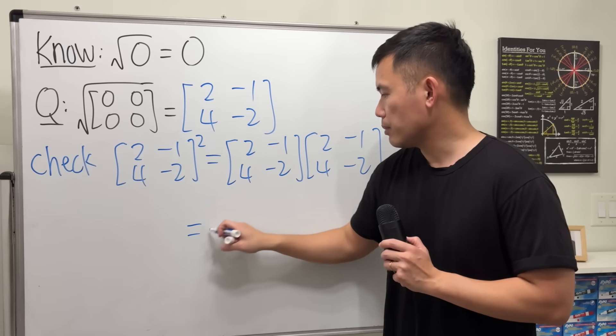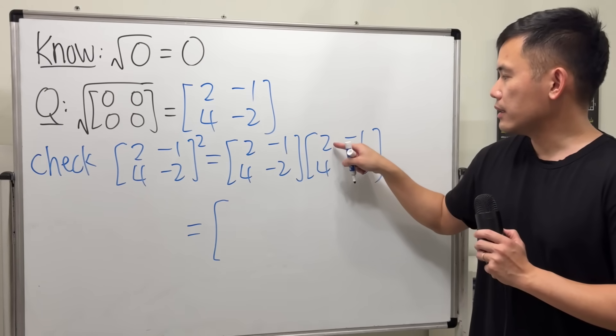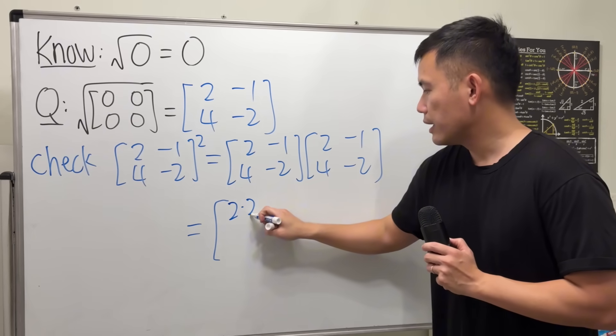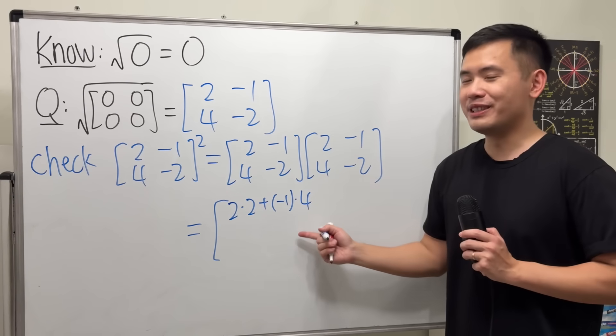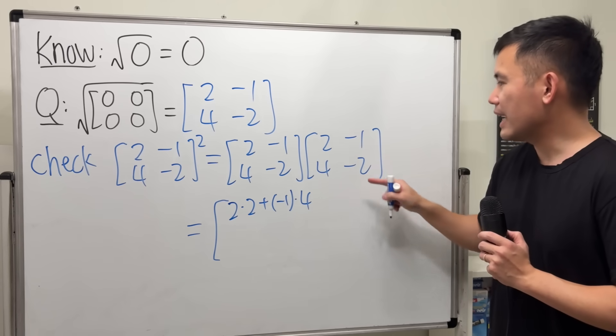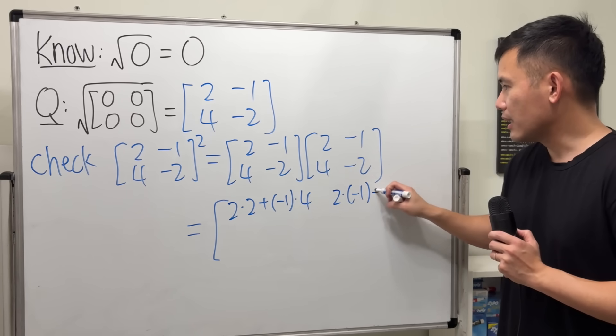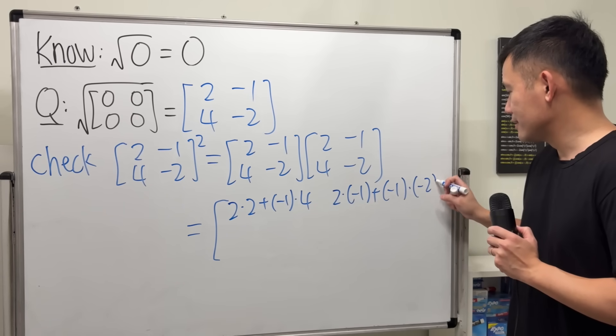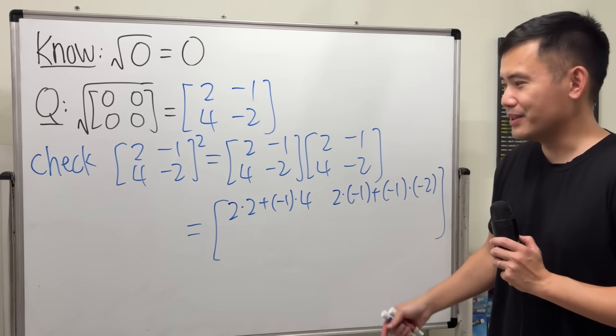And this is how we multiply matrix. We do the dot product of the row and then the column here, so we do 2 times 2, and then we add negative 1 times 4. And you can see this is promising, because this is equal to 0. And we continue. Let's do this dot that, so 2 times negative 1, plus negative 1 times negative 2.